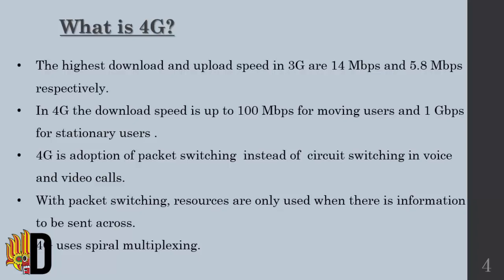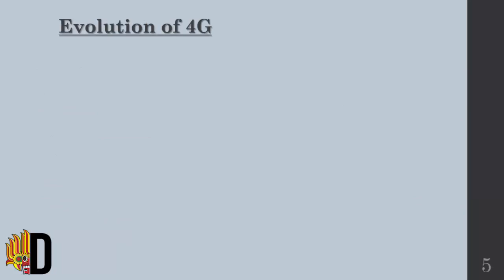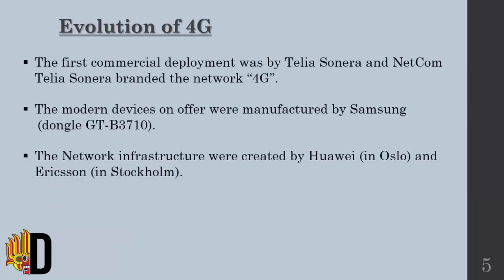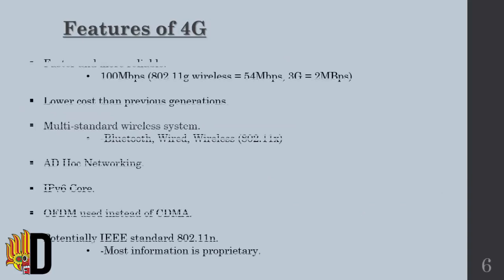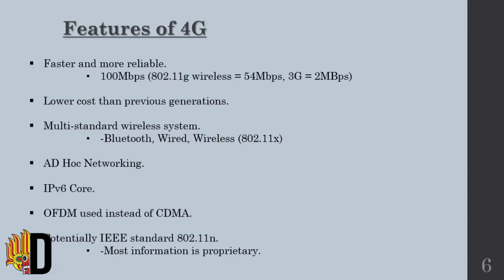Now let's see the evolution of 4G. The first commercial deployment was by TeliaSonera and Netcom. TeliaSonera branded the network as 4G. The modern devices were manufactured by Samsung, and the network infrastructure was created by Huawei and Ericsson. 4G broadband has many features such as faster and more reliable connections, lower cost than previous generations, multi-standard wireless systems, IPv6 core, ad hoc networking, and OFDM used instead of CDMA.